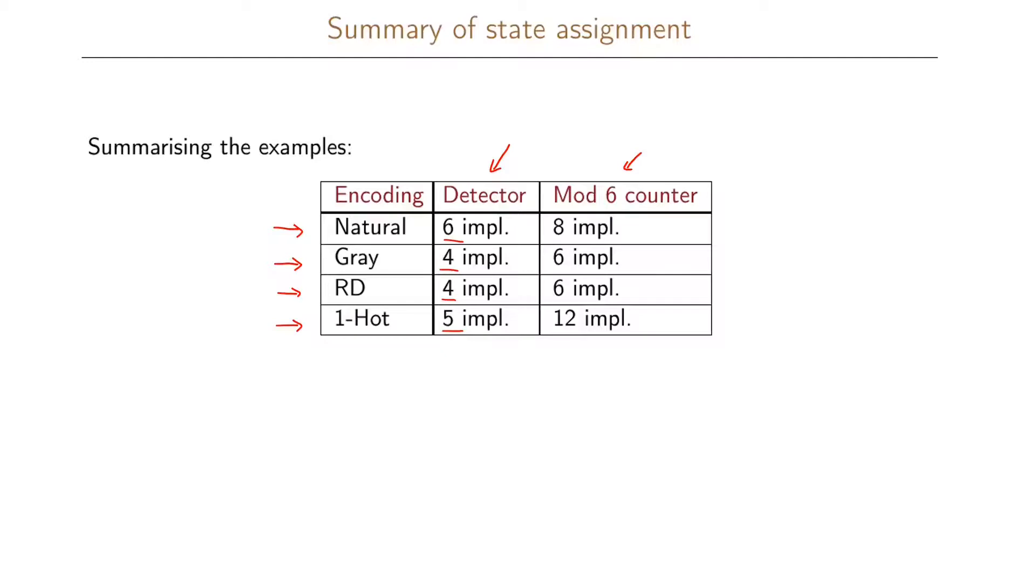We have a similar situation for the modulo 6 counter where the natural coding gives us eight implicants while the gray coding and the reduced dependency coding only gives us six implicants. And the one hot state assignment strategy gave us 12 implicants in total.